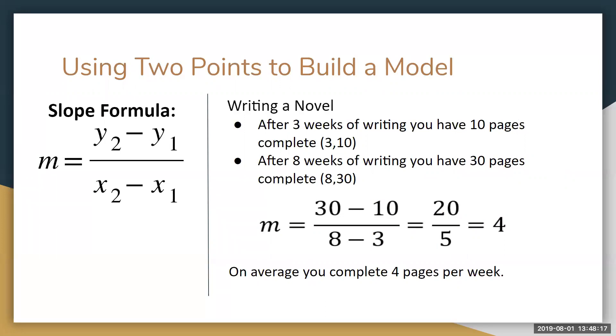Consider this example. Let's say you're writing a novel, and you've noticed by the third week of writing you've completed 10 pages, and by the eighth week you have completed 30 pages. You could treat these two pieces of data as ordered pairs in terms of x and y. So three weeks of writing, you have 10 pages, we could call that (3,10) as an ordered pair. And eight weeks of writing, 30 pages, we could call that (8,30). We can then plug them into the slope formula to find your rate of change, which I've done here on the screen. 30 minus 10,